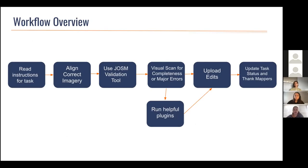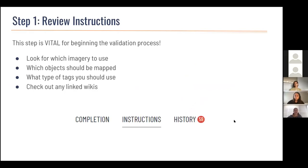Now we will go through the workflow of validating. Once you have a task selected, where do you begin? Before you do anything, it is important to read all the instructions for your task. From there, you have to make sure you are using the correct imagery and that it's aligned. The JOSM validation tool helps make things easier when checking over the work and looking for errors. The next step is to visually scan for completeness or correct any map errors, and you may also want to use helpful plugins. Once everything looks good and complete, you can upload the edits. The final step is to update the task as validated and provide constructive feedback to the mappers that worked on the task.